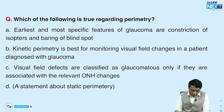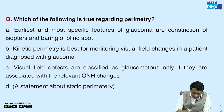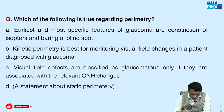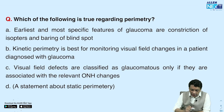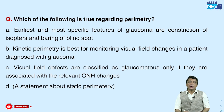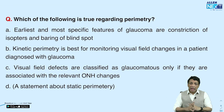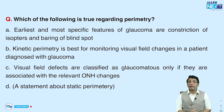Question three — a clinical question: which of the following is true regarding perimetry? Choice A states the earliest and most specific features of glaucoma are constriction of isopters and enlargement of the blind spot — this is incorrect. These features are actually very non-specific and can be seen in other conditions. Perimetry checks optic nerve function. Vision tests the fovea and macula, while visual field tests the optic nerve — they are not the same.